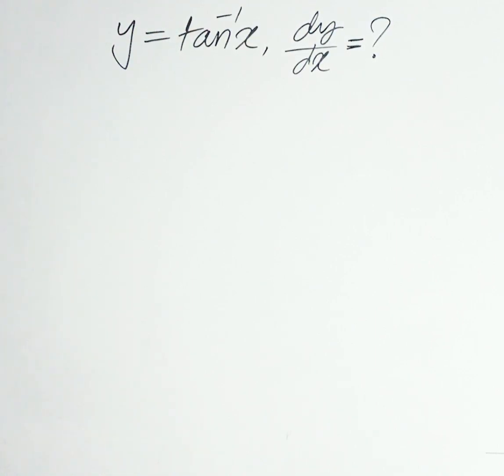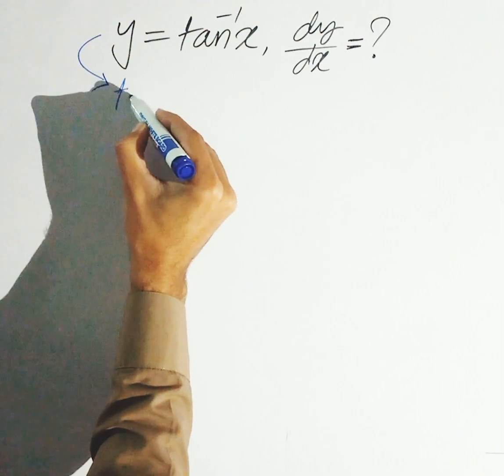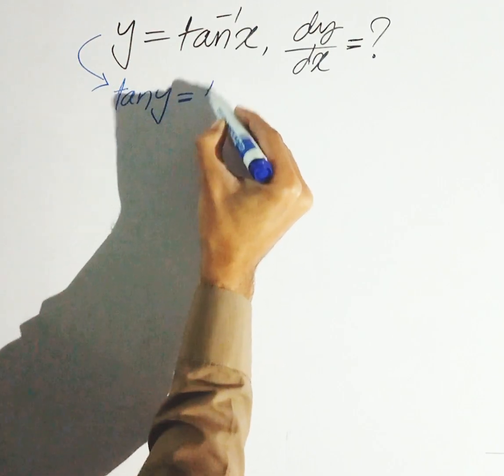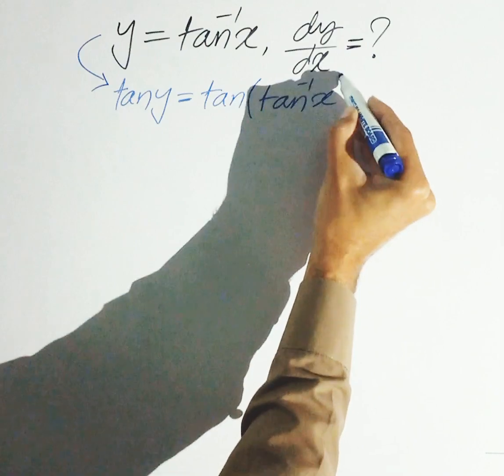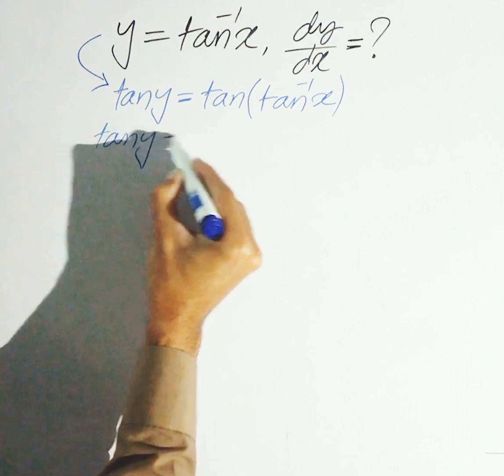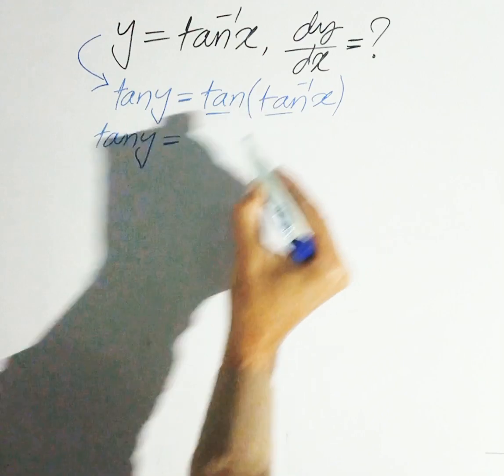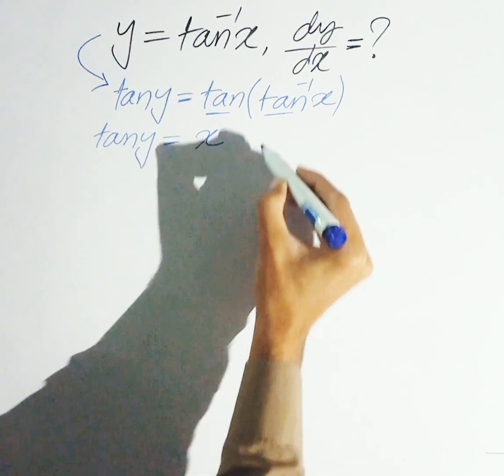y is equal to tangent inverse of x, and we will derive this to find dy/dx. So on both sides, we will apply tangent. Tangent of y is equal to tangent of tangent inverse of x. Here we have an identity: tangent of tangent inverse gives you x. So tangent y is equal to x.